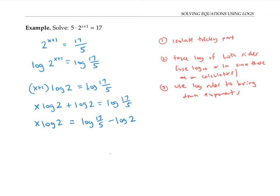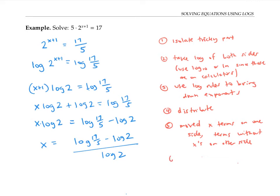Finally, I factor out my x, which is already kind of factored out, and I divide to isolate it. So to summarize what I did: I distributed, I moved all the x terms on one side and the terms without x on the other side, and then I isolated the x by factoring out and dividing.